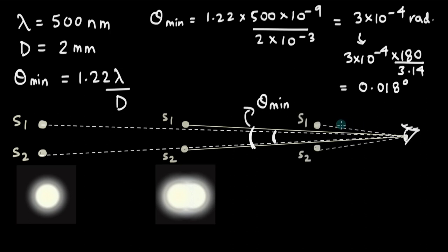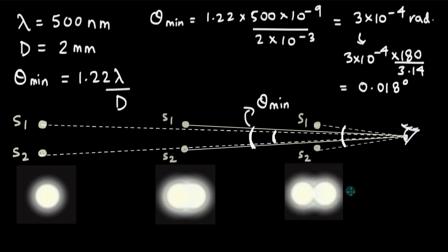Coming back to the two headlights: when they are far from the eye they make an angle less than theta_min, so we cannot separate the two sources and identify them as only one. When the light sources come closer, the angle increases, and at some point the angle equals theta_min = 0.018 degrees — we are just able to resolve them as two separate sources. For distant stars, the angle at the aperture is extremely small, so we use telescopes. For telescopes, the aperture diameter D is extremely large, which makes theta_min very small, meaning a telescope can finely resolve two distant objects even when they subtend a very small angle.